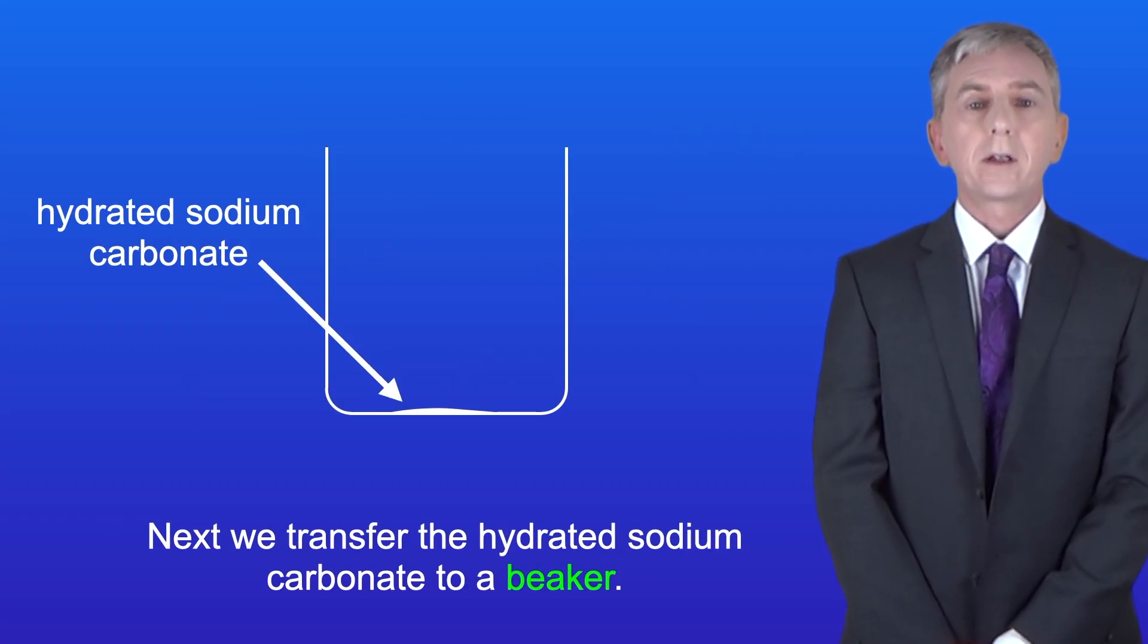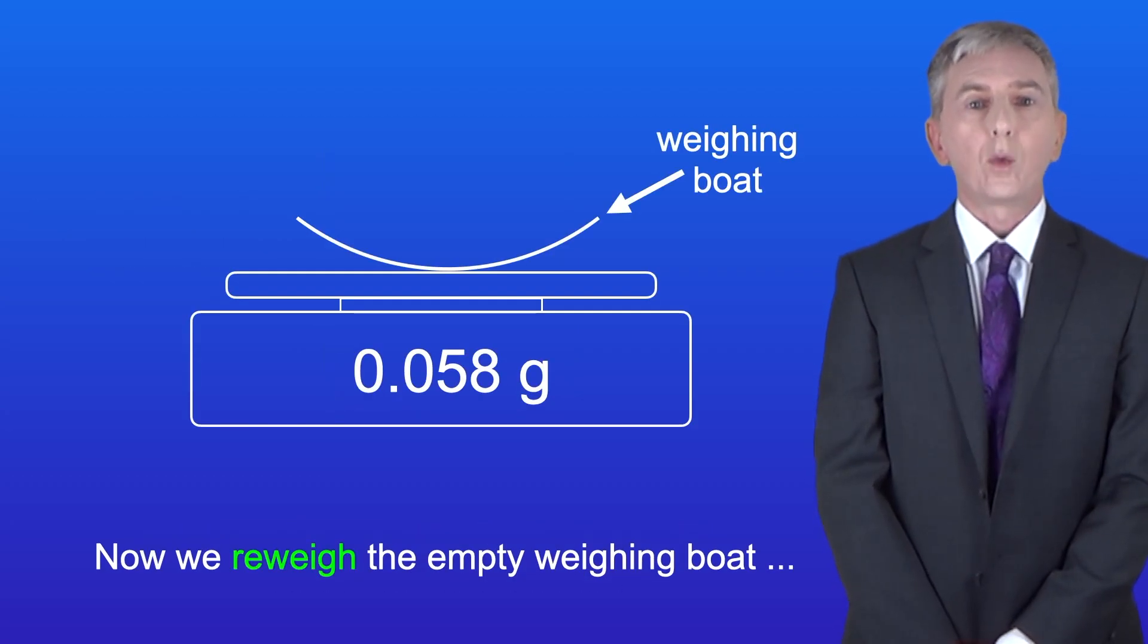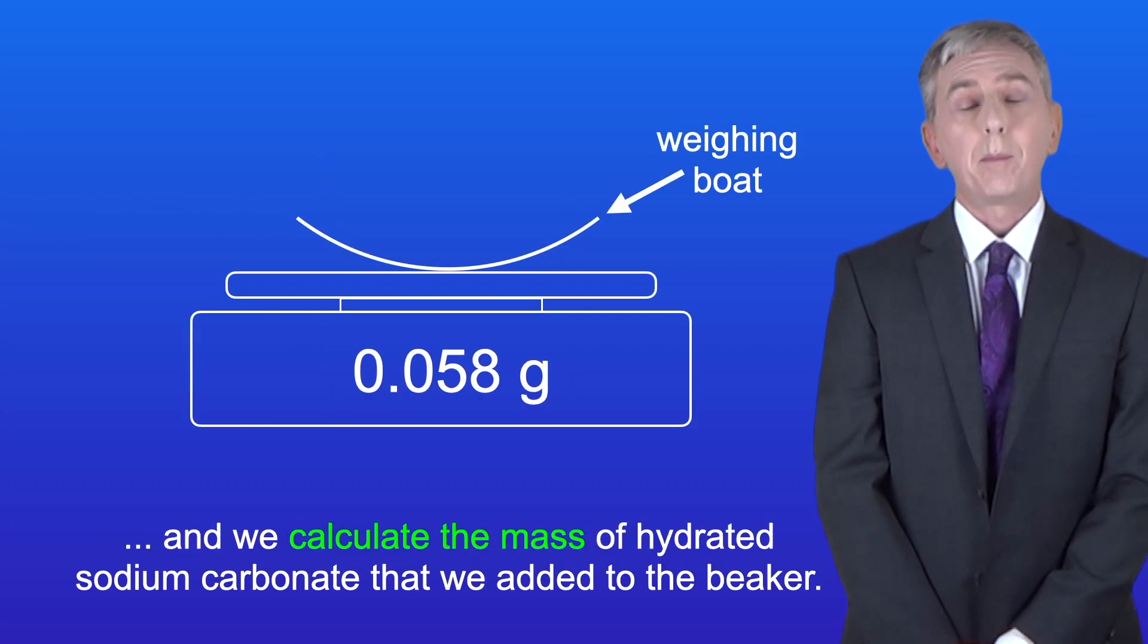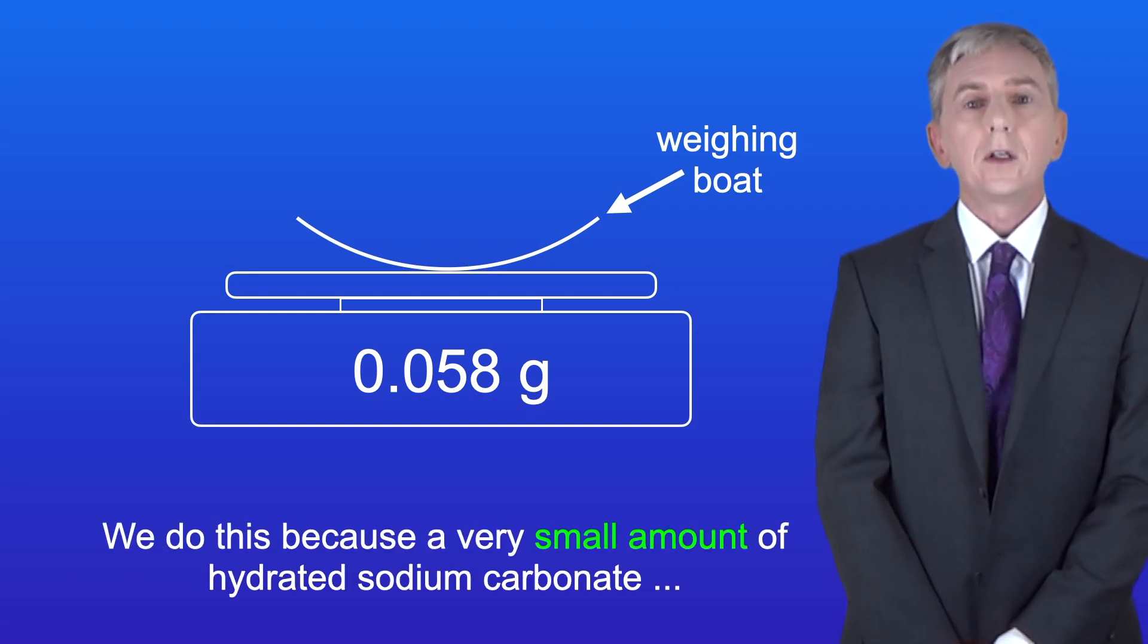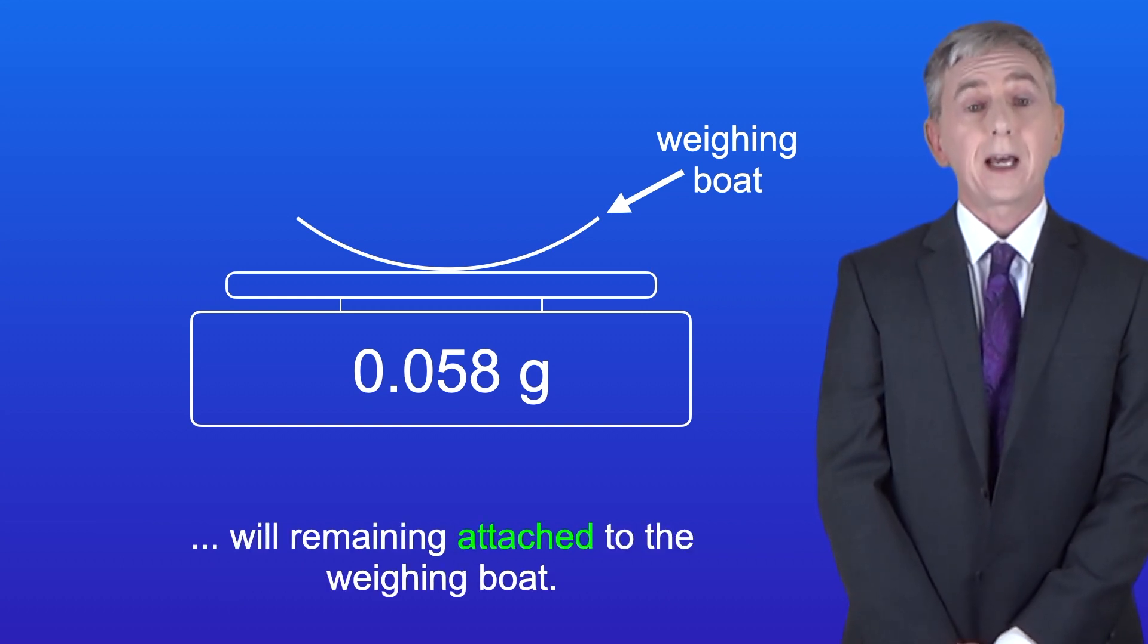Next, we transfer the hydrated sodium carbonate to a beaker. Now we re-weigh the empty weighing boat, and we calculate the mass of hydrated sodium carbonate that we added to the beaker. We do this because a very small amount of hydrated sodium carbonate will remain attached to the weighing boat.